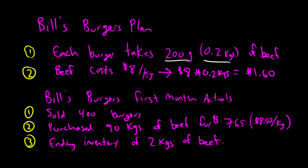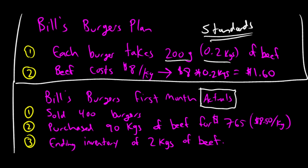Now, he goes through a month of business, and here's what actually happened. This is where variances come in. They're useless for just planning. I mean, it's nice to have a plan, but where the real value from setting these standards comes in is when you actually compare what really happened to your plan. You compare your actuals to your standards. These are Bill's standards for making a burger, and these are Bill's actuals. Here's what actually happened. Bill, in the first month, sold 400 burgers. During the month, he purchased 90 kilograms of beef. It cost him $765, $8.50 a kilogram, and he had an ending inventory of 2 kilograms of beef.